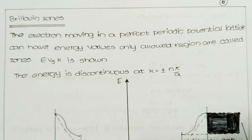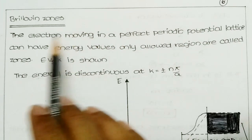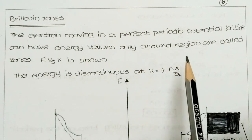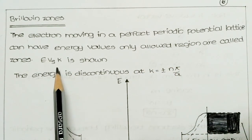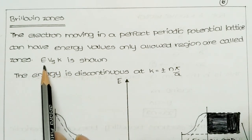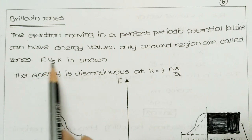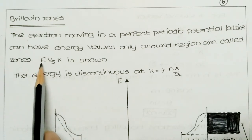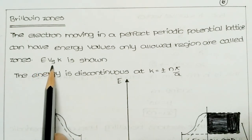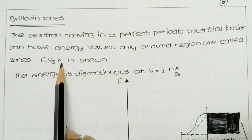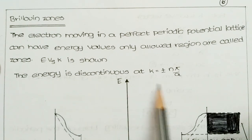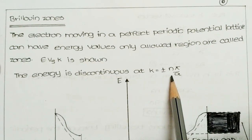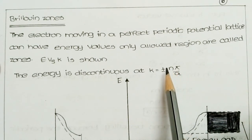Hi students, today my topic is Brillouin zones. An electron moving in a perfect periodic potential lattice can have energy values only in allowed regions, which are called Brillouin zones. Energy versus K is shown here, where E means energy and K means wave vector. The energy is discontinuous at every k equal to nπ/a, that means the wave vector nπ/a.